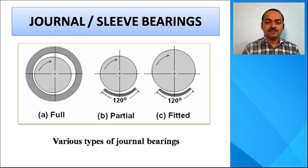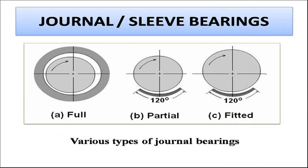First we will go for understanding the journal or sleeve bearings. We have seen that hydrodynamic bearings carry the load due to their motion. There are three categories of bearings available. One is a full bearing which has an angle of contact equal to 360 degrees and it takes the load in any direction. Another is the partial bearing, which generally has an angle of contact less than 180 degrees, and the most commonly used value is 120 degrees. These are generally used in railroad cars, and the load in this kind of bearing will be taken in only one direction.